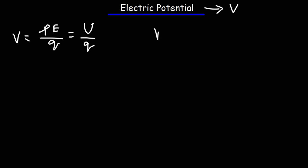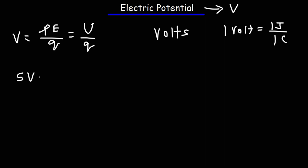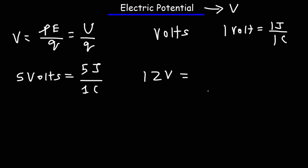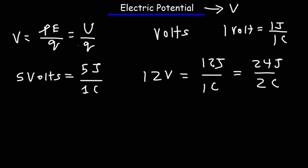Electric potential is measured in volts. One volt is equal to one joule of potential energy per one coulomb of charge. So an electric potential of five volts means a one-coulomb charge has five joules of potential energy. An electric potential of 12 volts means a one-coulomb charge has 12 joules of potential energy, or two coulombs of charge has 24 joules. Electric potential is simply the ratio of electric potential energy per unit charge.